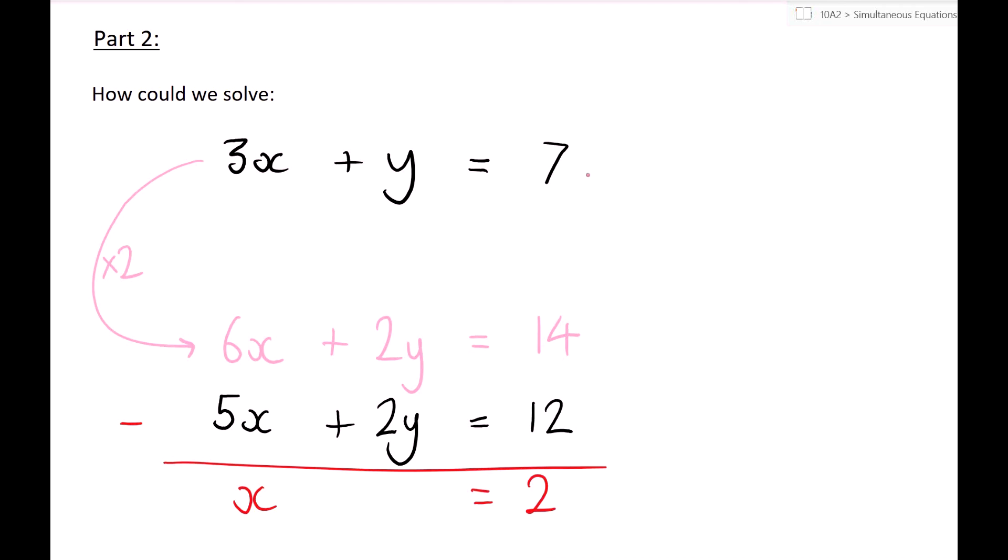I can then plug it into any equation. So over here, if x equals 2, that means 3 lots of x is 6. 6 plus y equals 7. From there, it's fairly straightforward, so the y is going to be 1.